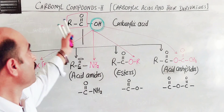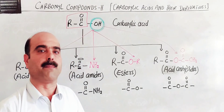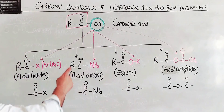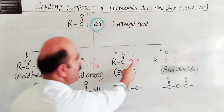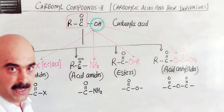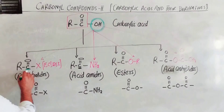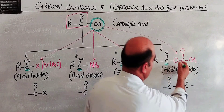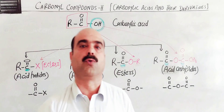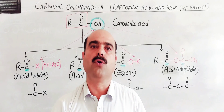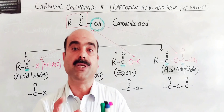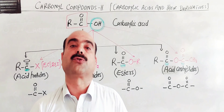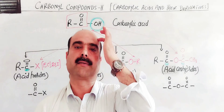This was the basic introduction to Carbonyl Compounds 2 — the second category covering carboxylic acids and their derivatives, including acid halides, acid amides, and esters. It is sufficient for today. Inshallah, next time we will discuss each chapter in detail. Thanks a lot for watching the video.